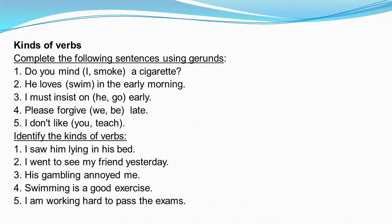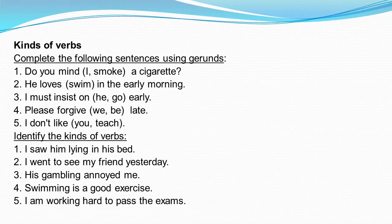Now some other sentences — identify the kinds of verb. Number 1: I saw him lying in his bed — here lying is present participle. Number 2: I went to see my friend yesterday — here to see is infinitive. Number 3: His gambling annoyed me — here gambling is gerund. Number 4: Swimming is a good exercise — here swimming is gerund. Number 5: I am working hard to pass the exams — here working is present participle. That was your lesson. I hope you have understood it.